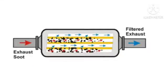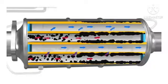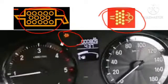This filter traps soot particles. Once above 45% of soot particles are trapped, the filter becomes blocked. At that point, the filter needs a regeneration process. The instrument panel will indicate a DPF warning light, continuously blinking until the regeneration is completed.